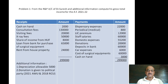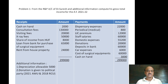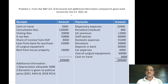Let us see one problem relating to the medical profession, that is a doctor. From the receipt and payment account of Dr. Suresh and additional information, compute his gross total income for the assessment year 2021-22 under the head professional income.